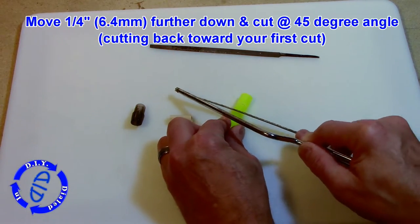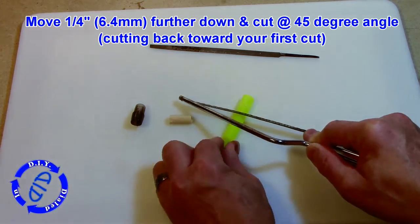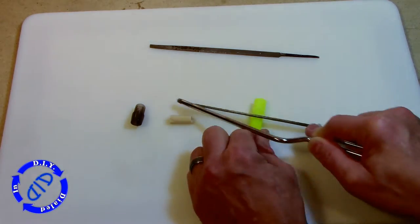Now moving just a little bit farther down the body of the pen, we're gonna make an angled cut at about 45 degrees, cutting back towards that first cut.